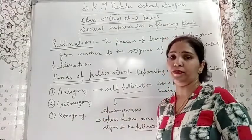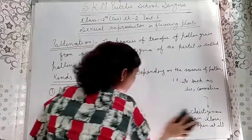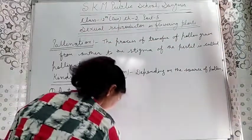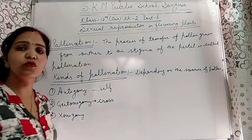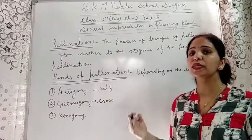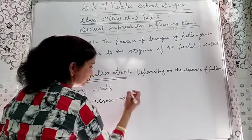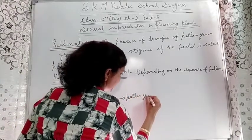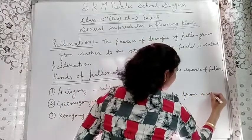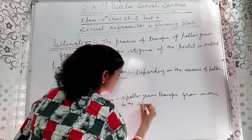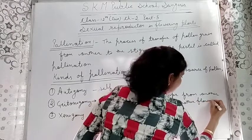Next is geitonogamy. This is the type of cross-pollination. Transfer of pollen grain occurs from anther to the stigma of another flower of the same plant. So in geitonogamy, pollens transfer from anther to the stigma of a different flower on the same plant.